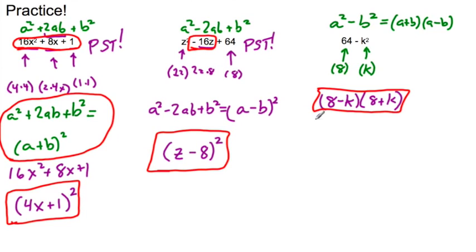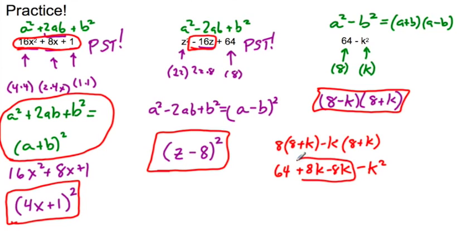But if I wanted to expand it and work this out, then we would see 8(8 + k) - k(8 + k). And as I expand, you'll see here's my 64 + 8k - 8k. That's why my middle term cancels out. Minus k² at the end. These values cancel. And then you're left with that 64 - k².